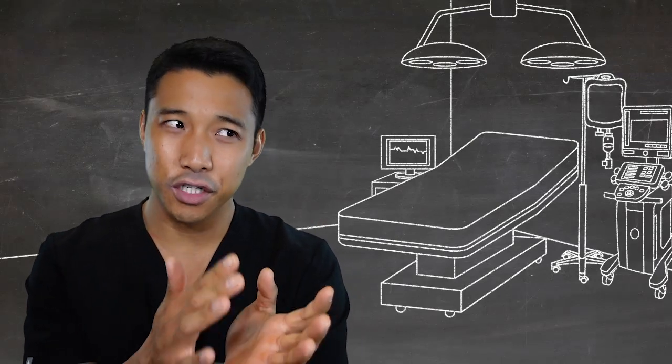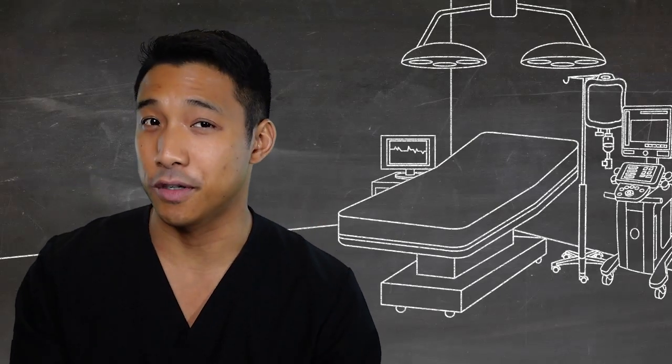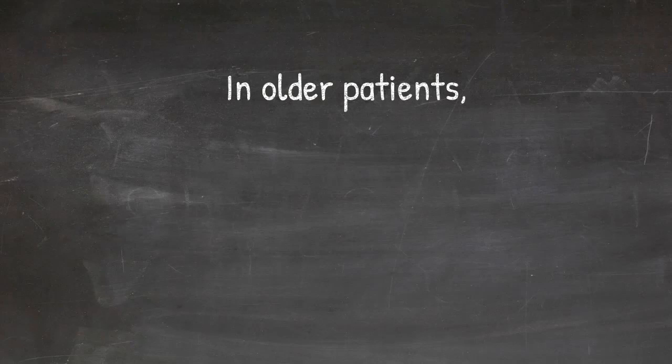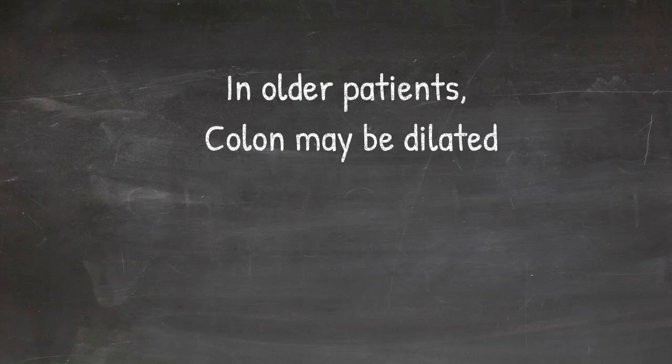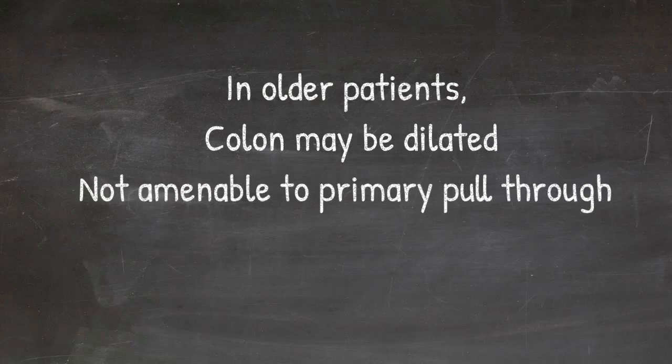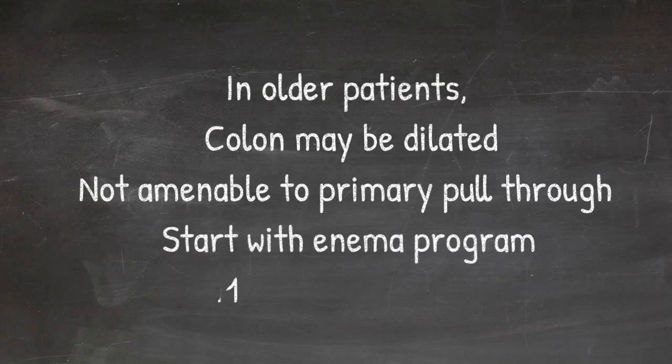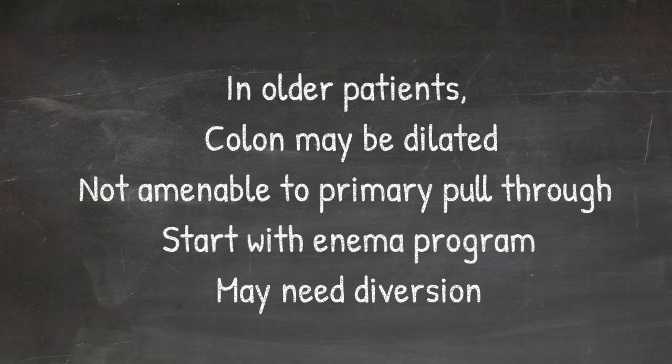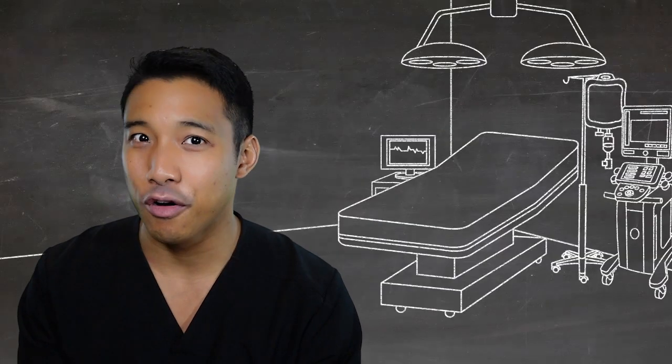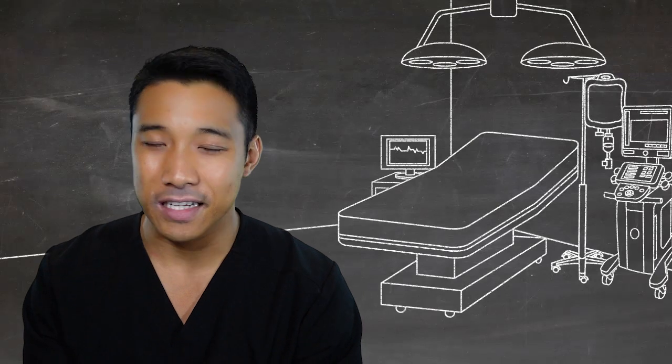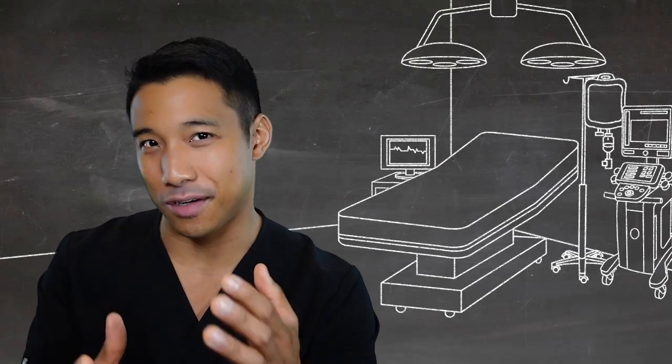Okay, so let's forget about the neonate. What about a child who's a little bit older with Hirschsprung disease? Older children are a little bit more difficult in that they've had this problem since birth, and a lot of times the colon has become dilated, and so they're not amenable to just doing a primary pull through in many cases. So children like that will start on an enema program. Some may need diversion more proximally to give the colon time to decompress.